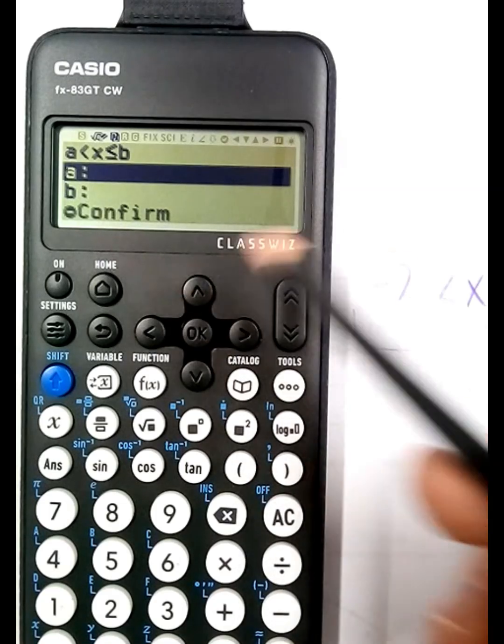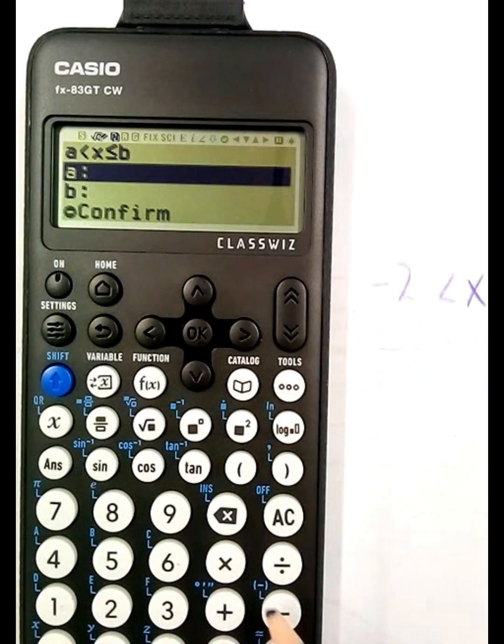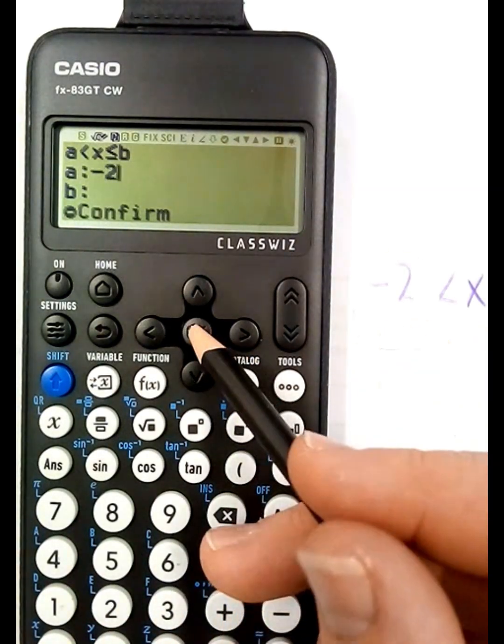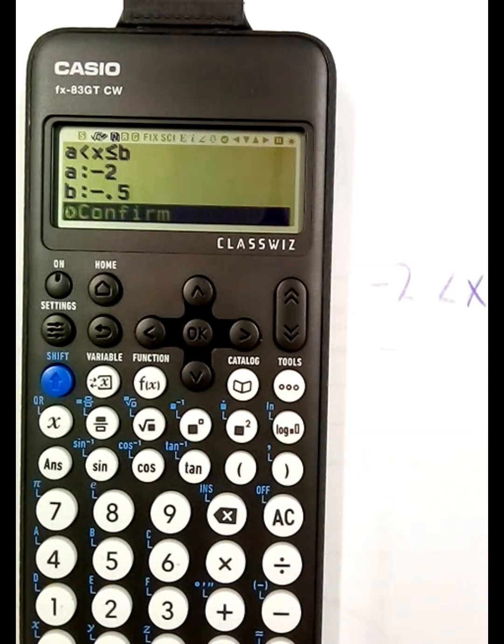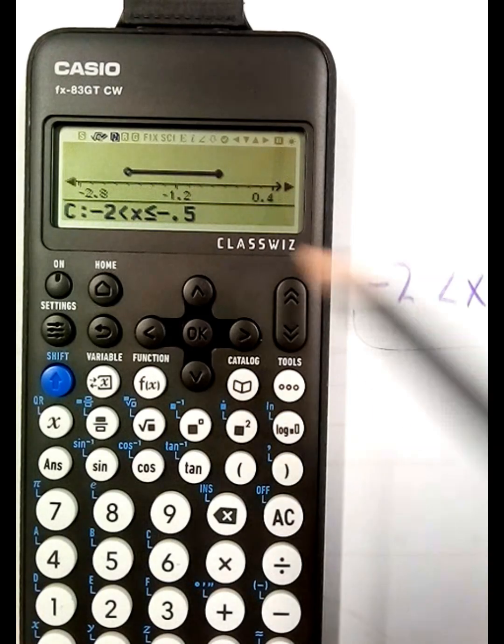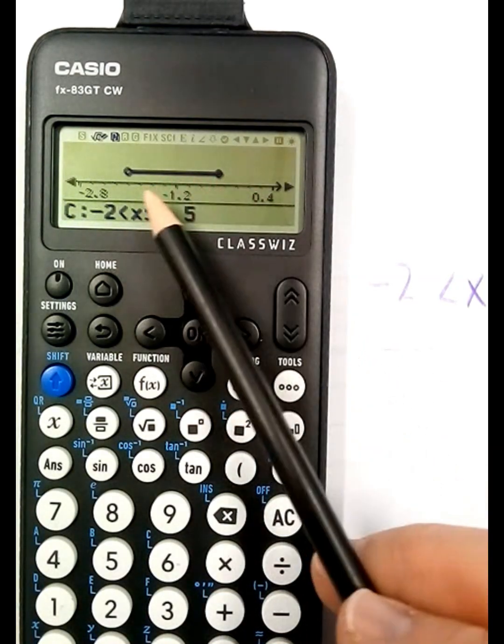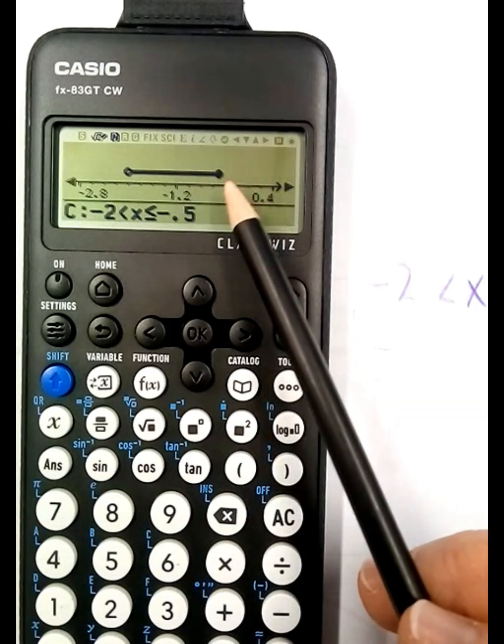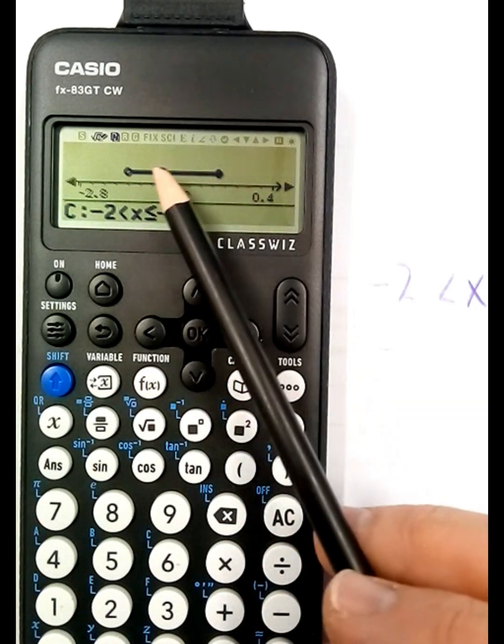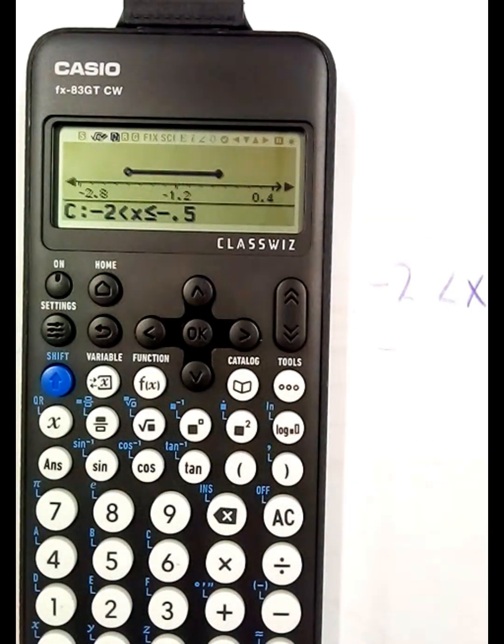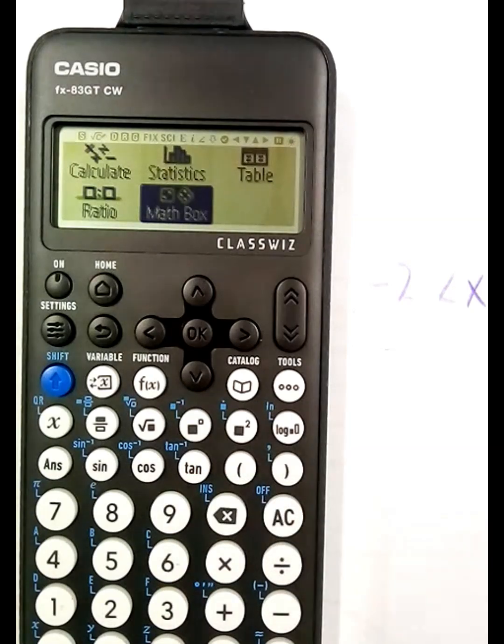So the a is going to be the lower one, it's going to be minus 2, and b is going to be minus 1.5. Execute, and there you have it. That's the number line drawn for you between minus 1.5 and minus 2, including minus 1.5, not including 2. So hope that helps you there, that's how you do a number line.